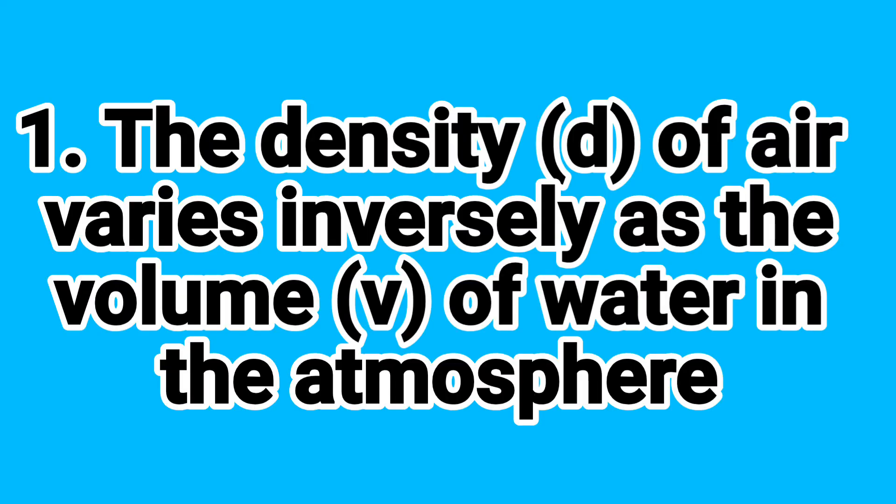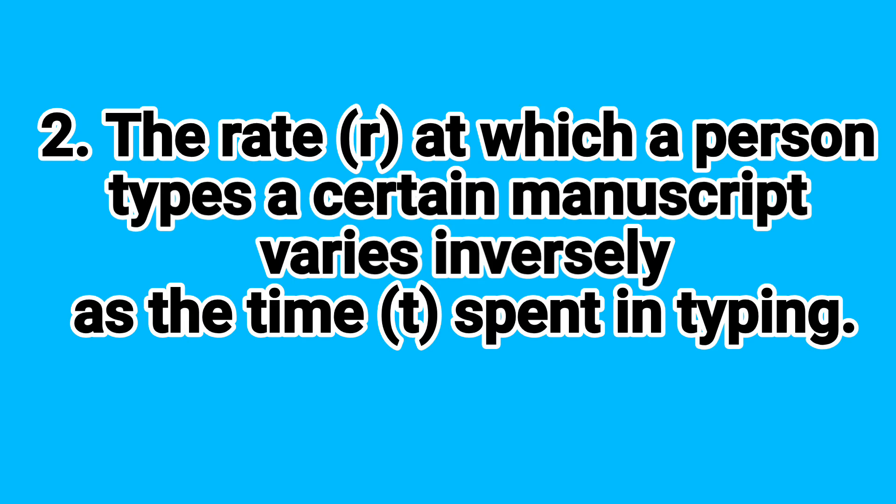Now, can you translate these statements into equation? Let's have a try. The density, D, of air varies inversely as the volume, V, of water in the atmosphere. The rate, R, at which a person types a certain manuscript varies inversely as the time, T, spent in typing. I hope you got it right.